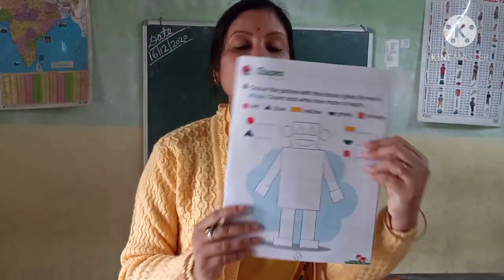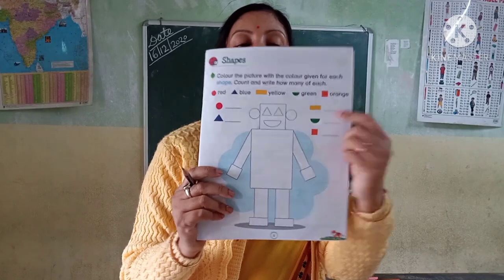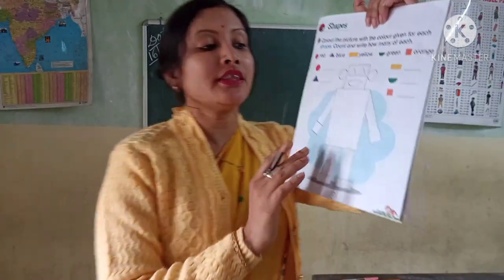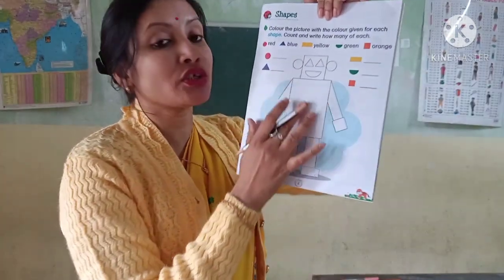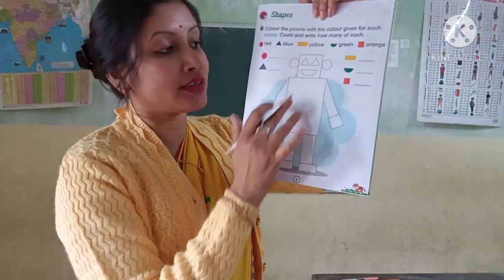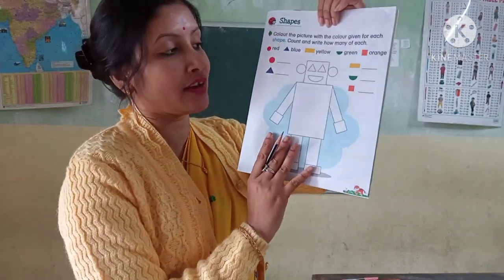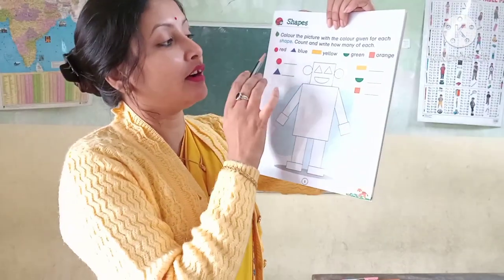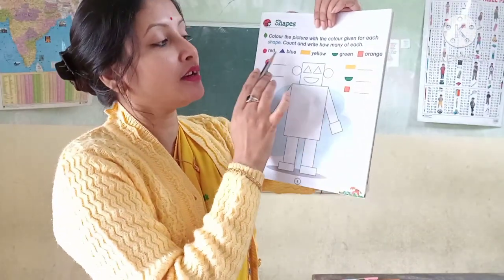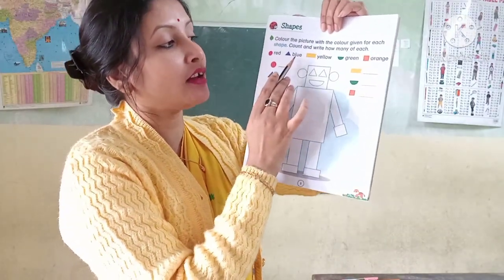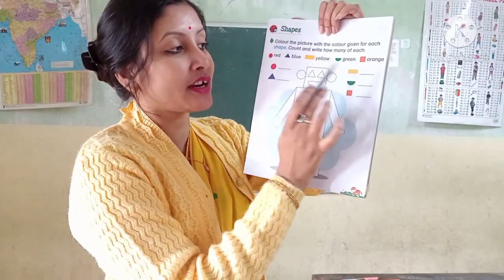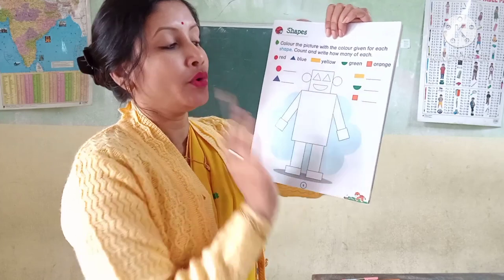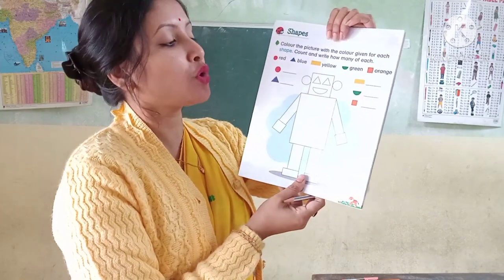Then see the next page, page number 5. In this page, pictures of shapes are given like circle, triangle, rectangle, semi-circle, and square.